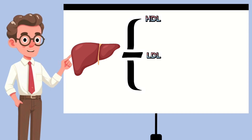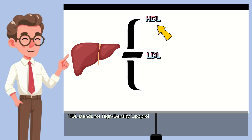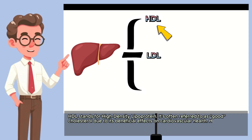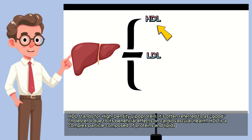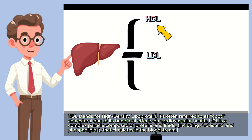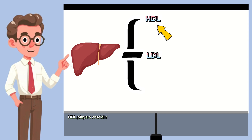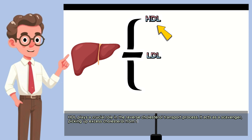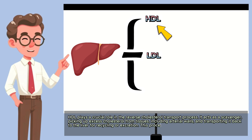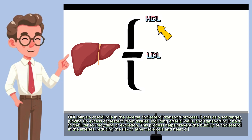First, we will talk about HDL. HDL stands for high-density lipoprotein. It's often referred to as good cholesterol due to its beneficial effects on cardiovascular health. HDL is a complex particle composed of proteins and lipids, including cholesterol and phospholipids, that circulates in the bloodstream. HDL plays a crucial role in the reverse cholesterol transport process. It acts as a scavenger, picking up excess cholesterol from tissues, including arterial walls, and transporting it back to the liver for recycling or excretion. This process helps prevent the buildup of cholesterol in the arteries, reducing the risk of atherosclerosis and heart disease.